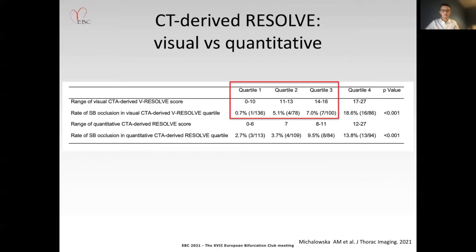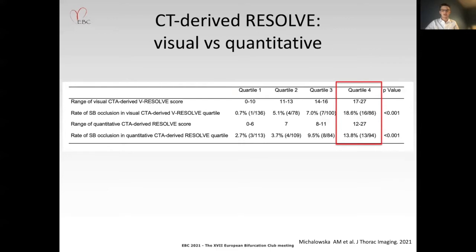The discriminatory performance of the CTA-derived visual Resolve Score was equal to the quantitative CTA-derived Resolve Score, as confirmed by comparable rates of side-branch occlusion within high-risk groups. Interestingly, consistent with prior angiographic studies, the lowest score in quartile four for the CTA-derived visual score — being 17 points — was higher than that of its quantitative counterpart at 12 points, emphasizing the overestimation inherent to visual assessment compared with quantitative CTA analysis.